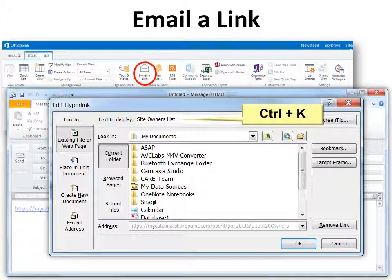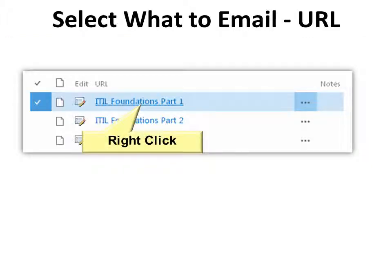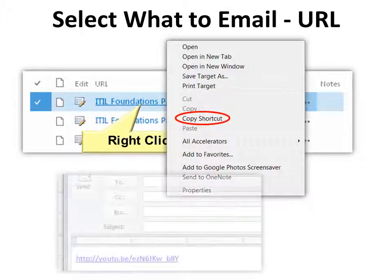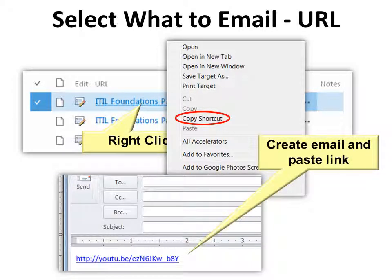If you want, you can right-click or hit Ctrl+K and turn that long link into a short link. If you're sending a URL link, you don't need to open the URL — simply right-click on the name and one of your options is to copy a shortcut, then create the email and paste that link.